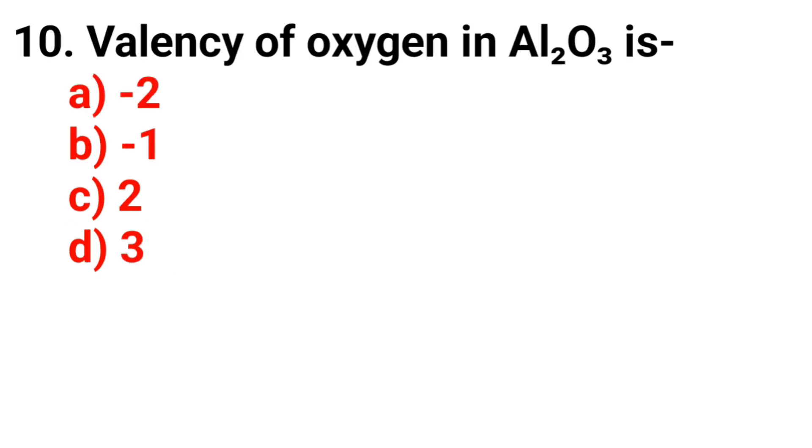Question 10. Valency of oxygen in aluminum oxide is. The answer is Option C, Two.